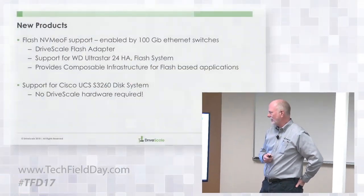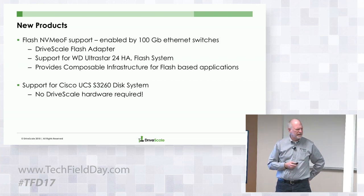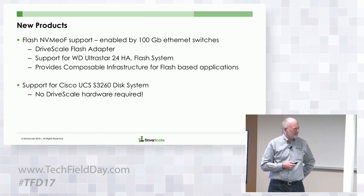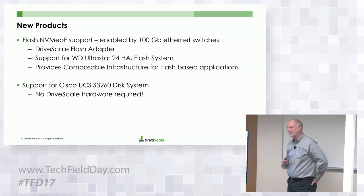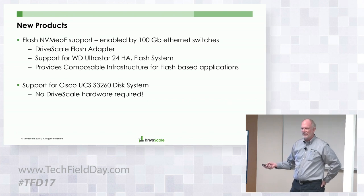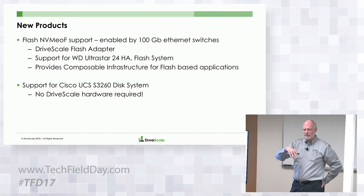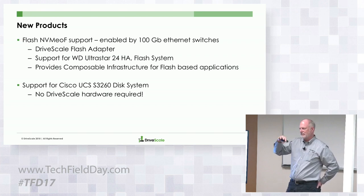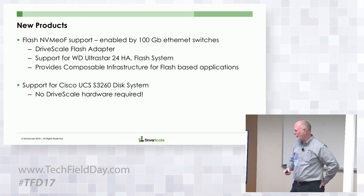An example of the disk drive box is the Cisco S3260 — 56 drives, two x86 controllers. We took our adapter software and put it on the x86 controllers, so we can attach drives out of that box to other Cisco servers with no Drivescale hardware in the middle.